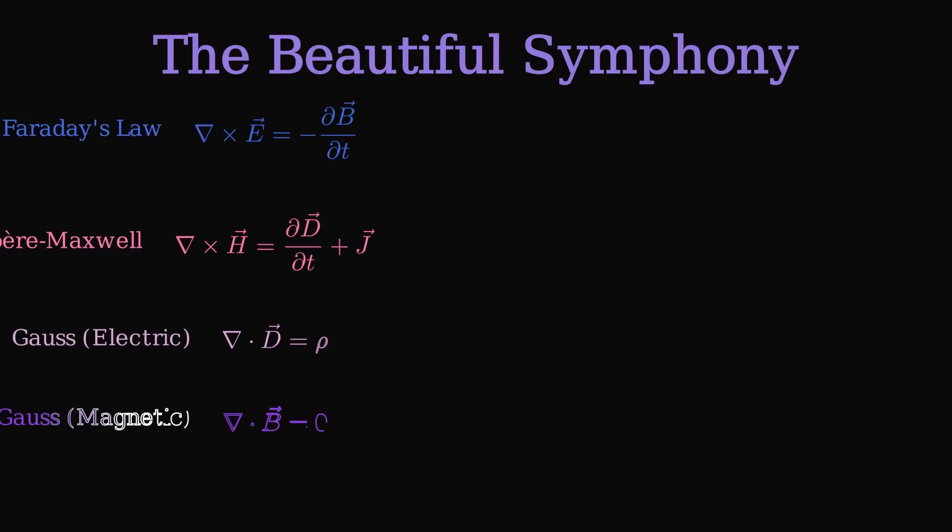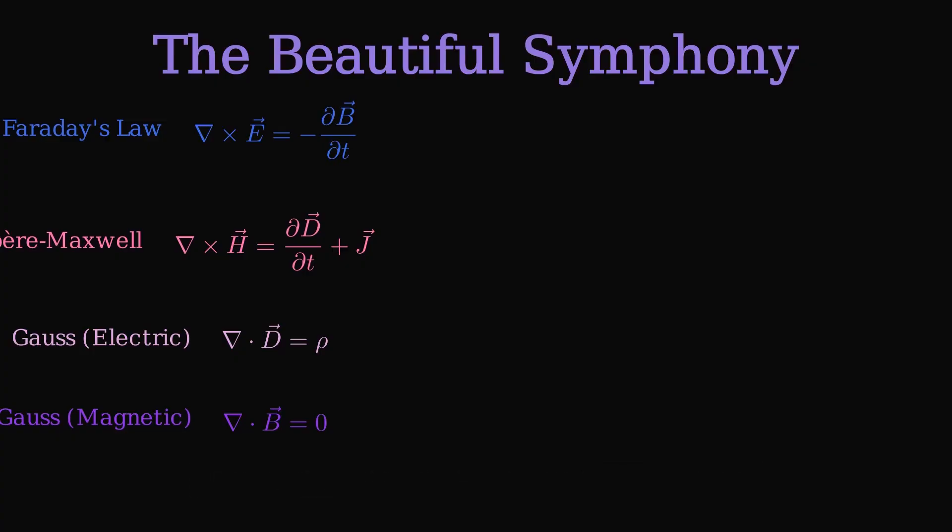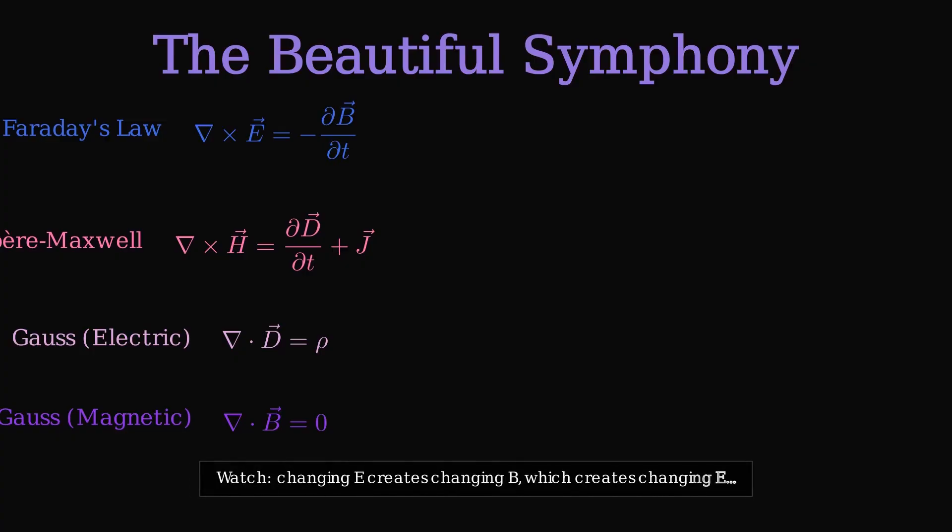Now watch these equations work together like instruments in a cosmic orchestra. A changing electric field creates a changing magnetic field, which creates another changing electric field, and so on. This self-sustaining dance creates electromagnetic waves that propagate through space.